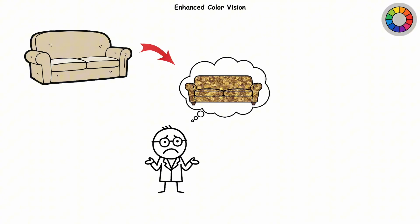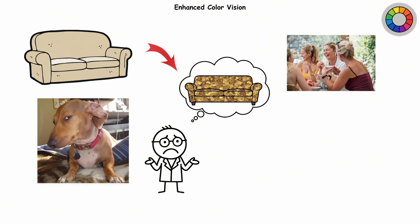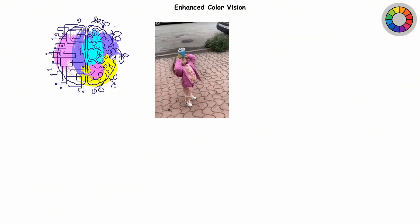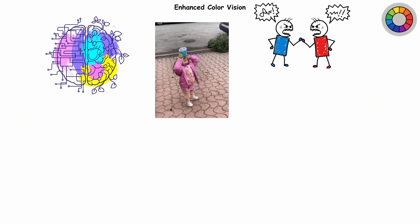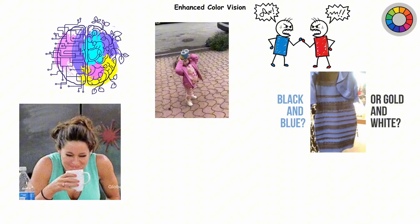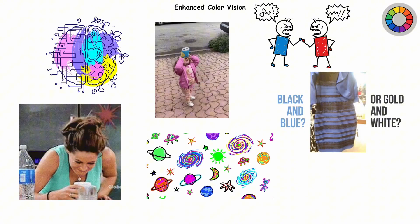To them, your beige couch is actually a complex tapestry of warm taupes, faint ambers, and silent judgment for calling it beige. This usually happens in women who inherit slightly different versions of the gene that makes those color-detecting cones. Their brains can combine the signals to reveal subtle hues invisible to most of us. So while the rest of us argue over whether a dress is blue and black or white and gold, tetrachromats are out there, seeing a whole other universe of colors, and quietly laughing at our peasant vision.